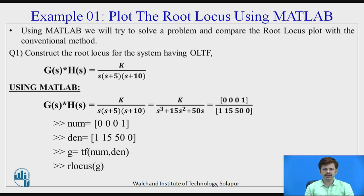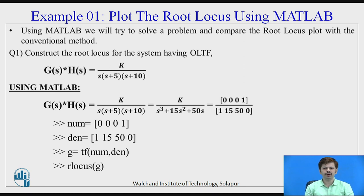At the numerator we have only K, whereas at the denominator we have s(s+5)(s+10). Converting to polynomial form gives K divided by s³ + 15s² + 50s. Now we need to convert this polynomial equation into a row matrix. At the numerator we have a constant term, and at the denominator we have the polynomial equation. From the denominator, the highest coefficient gives us the row matrix: 1, 15, 50, and 0. At the numerator, the row matrix is 0, 0, 0, and 1.